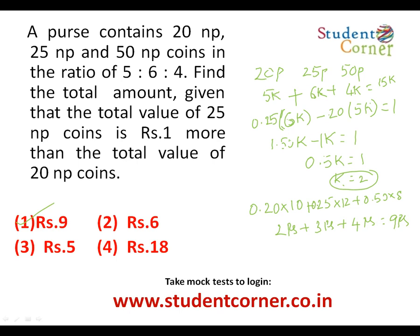This is a lengthier part, but we can use common sense. When K = 1, the difference between 25P coins value and 20P coins value is 50 paise. Since we need a difference of 1 rupee, we set K = 2. You can substitute K = 2 directly. This kind of thought process you will get only once you practice these kinds of questions.